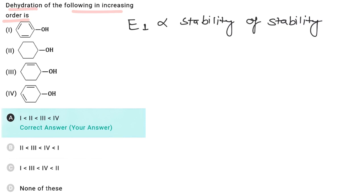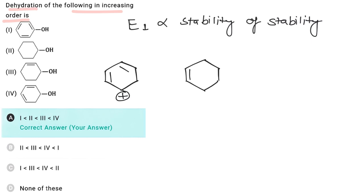If reaction takes place via E2 mechanism, then rate of reaction depends on stability of the alkene formed. In the fourth case, the maximum stable carbocation is formed and is extra stabilized by resonance. In the third case, the carbocation is also involved in resonance. In the second case, the carbocation is not involved in resonance but has 4 alpha hydrogens.